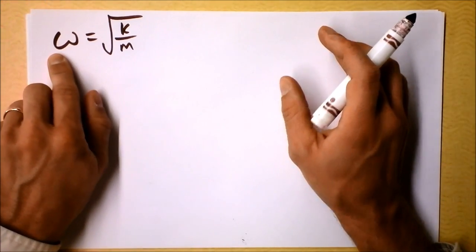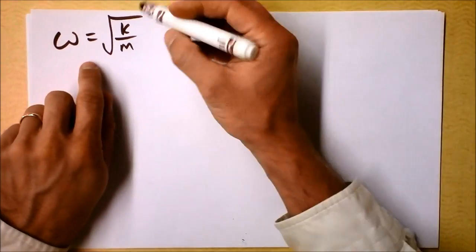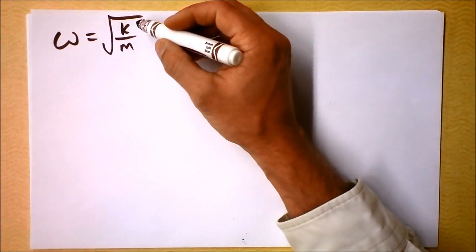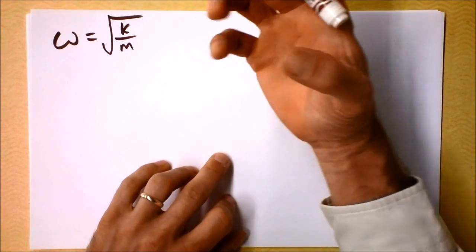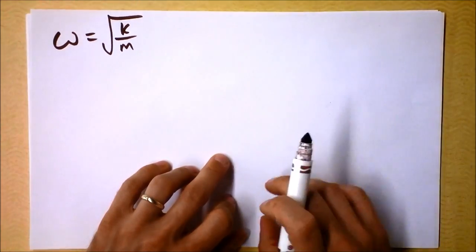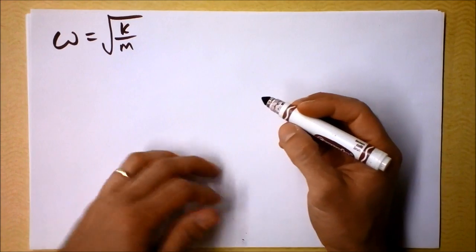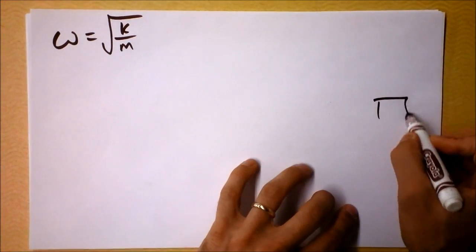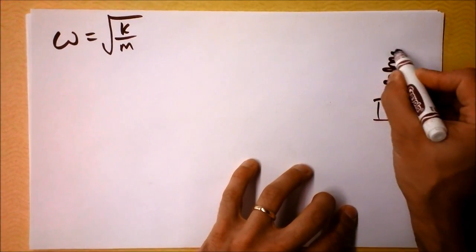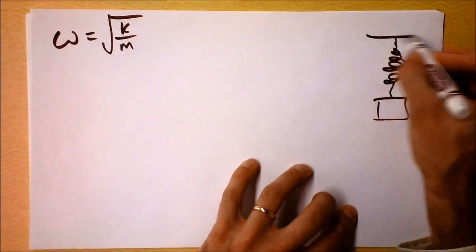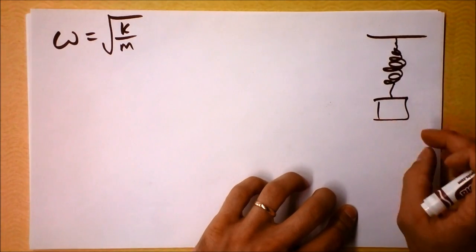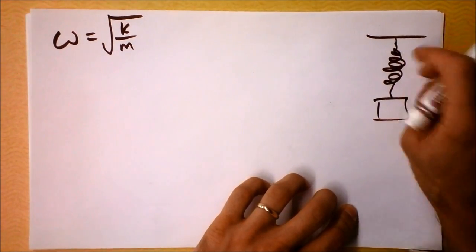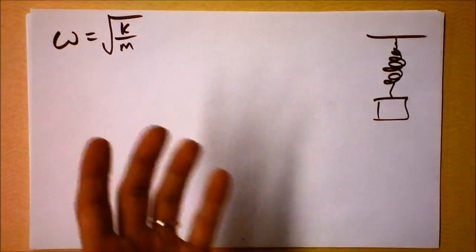With more mass, the system will less often return to where it started in terms of frequency. Now, a greater spring constant k means there's a greater restoring force getting that mass back to where it started. We could hang a mass from a spring and pull it down — a greater mass means omega will decrease, and a tighter spring means omega will increase. That it happens as a square root is a beautiful fact of nature.